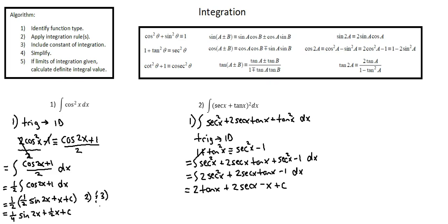Include constant of integration. In the next line we completed step 4: simplification. There were no limits of integration to calculate a definite integral. In example 2, step 2: apply integration — that's our last line of the analysis. Our last line is also step 3: include constant of integration. No further simplification is required, nor are there limits of integration given.